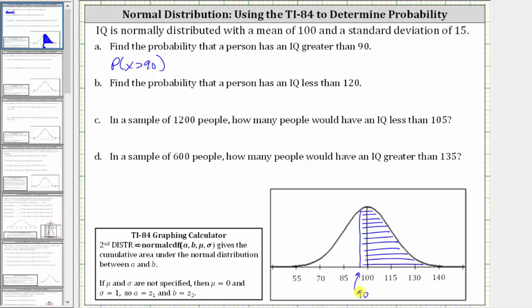Because 90 does not fall on one of the standard deviations above or below the mean, we cannot approximate this area using the empirical rule. We either have to use technology or find the z-score and use a table. In this video, we'll use the normal cumulative density function tool on the TI-84 to determine the probability.